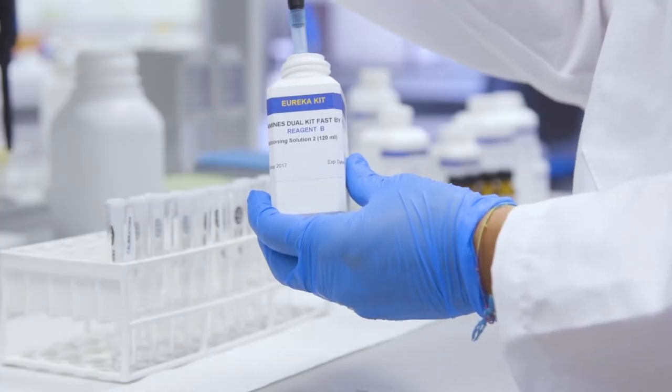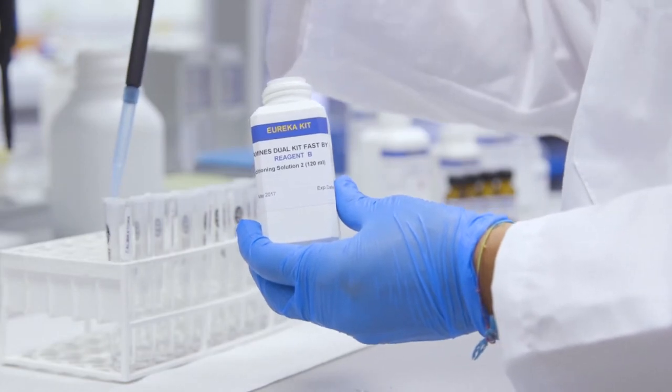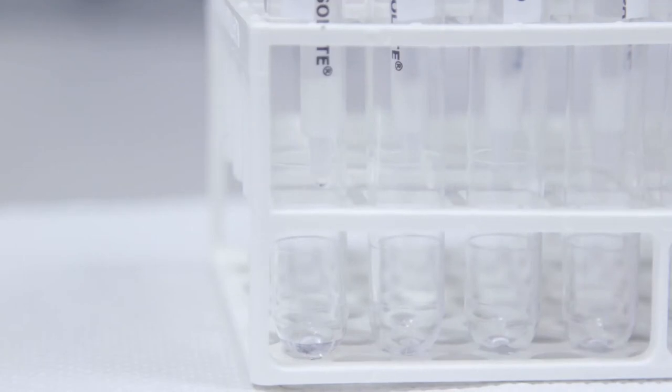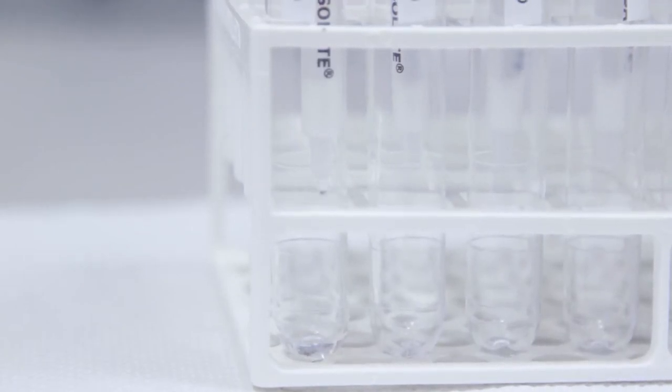Now pour one milliliter of reagent B conditioning solution one into the columns and let the solution flow through the column at a flow rate of one milliliter per minute drop by drop.